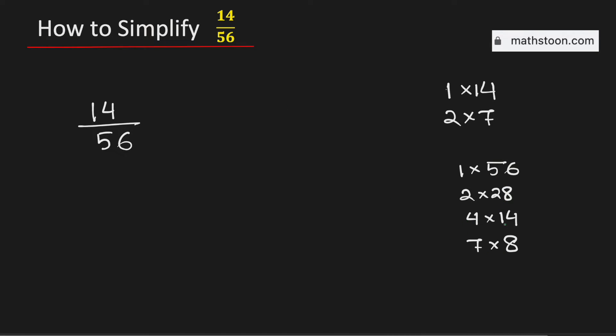See that among these numbers, 14 is the greatest one which is present in both these two lists. Therefore, the greatest common factor of 14 and 56 is 14.